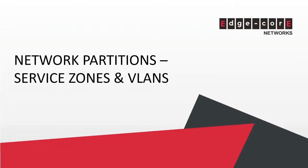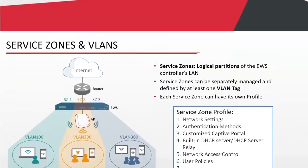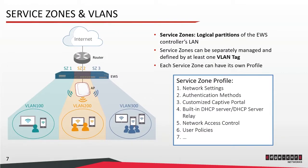On the EWS controller we have service zones, which are logical partitions of the controller's LAN. Service zones can be separately managed and defined by at least one VLAN tag. Normally you would have one VLAN tag per service zone. However, with another feature called PLM, or Port Location Mapping, you can have more than one VLAN tag for each service zone for flexible deployment. We will cover PLM on the next slide.